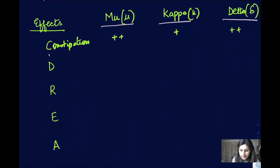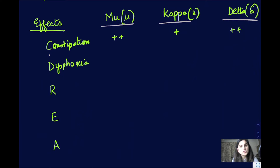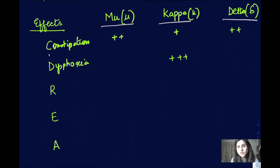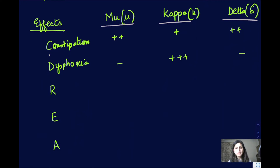D stands for dysphoria or hallucinations. Dysphoria is mainly due to the effect on the kappa receptor. The kappa receptor is primarily responsible for dysphoria — this effect is not because of any other receptor, it is specifically kappa.